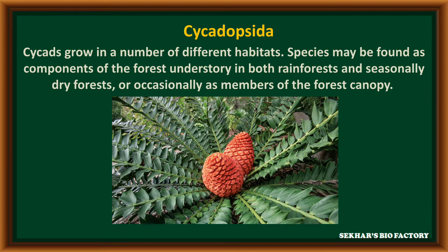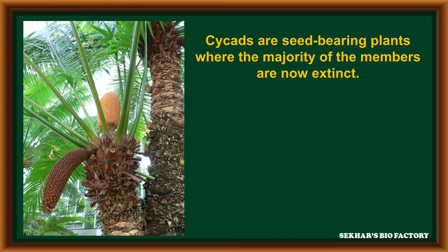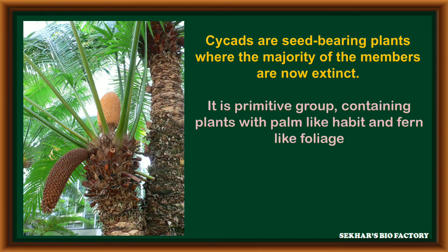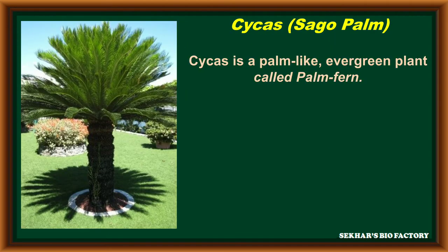Cycadopsida members are generally called Cycads. These members can grow in different habitats. Some of the species may be found as a component of forest, undisturbed in both rainforest and seasonal dry forest, while some members are occasionally present as a forest canopy. Cycads are seed-bearing plants where the majority of these members are now extinct. This group is considered a primitive group, containing many plants with palm-like habit and fern-like foliage. Most of the cycads are xerophytic in nature.